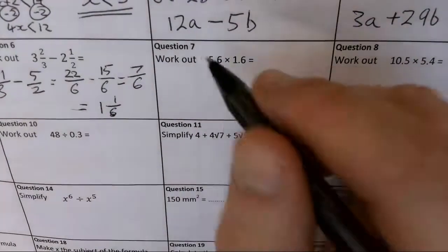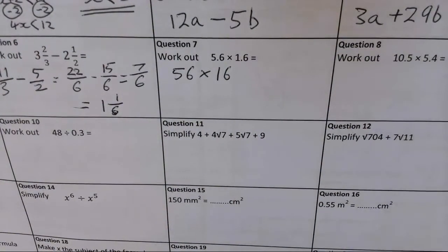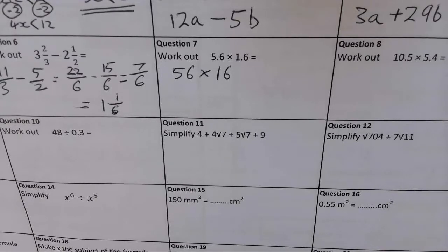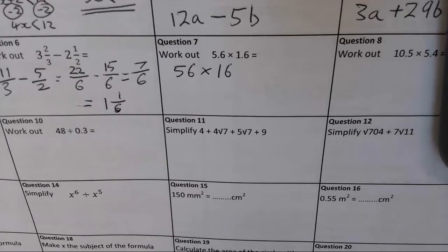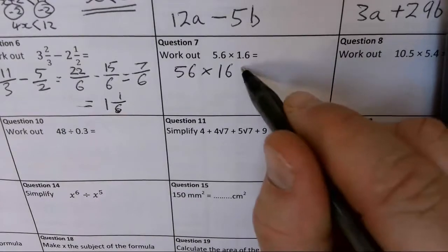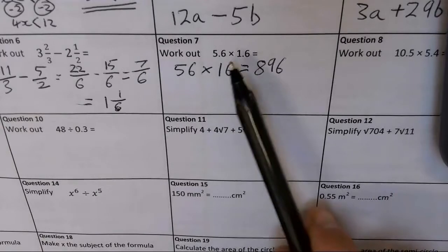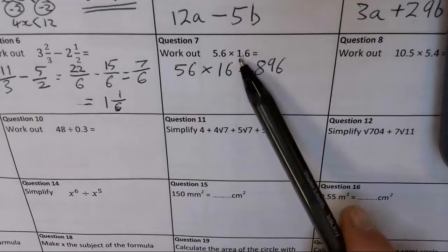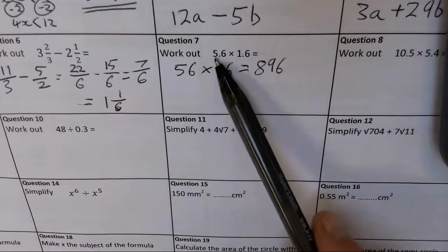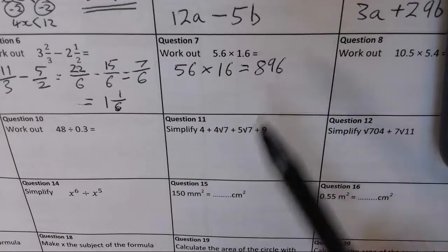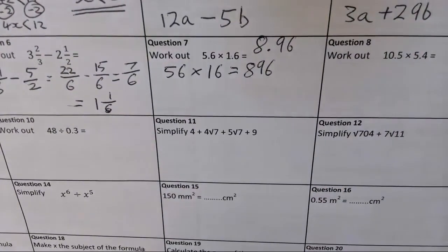For 5.6 times 1.6, I convert to whole numbers and do 56 times 16. Using a grid or column method, you get 896. I'm converting to whole numbers by multiplying each by 10, so the answer must be divided by 100 overall, giving 8.96.